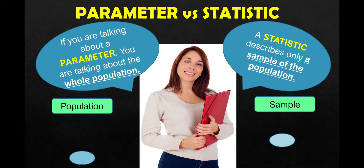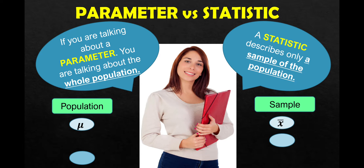So parameter is a population and statistic is a sample. For symbols: population mean uses the symbol mu (μ), while sample mean uses X-bar. Population standard deviation uses sigma (σ), while sample standard deviation uses S.